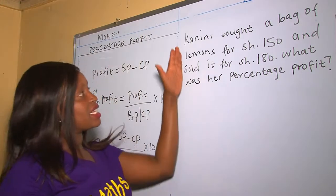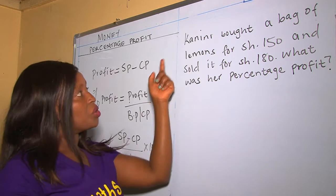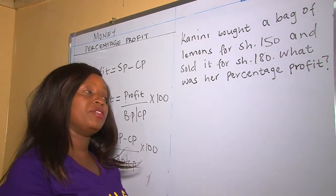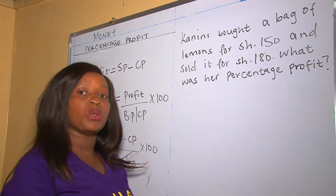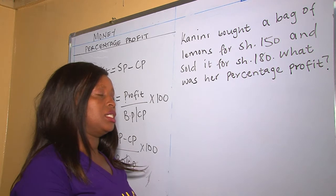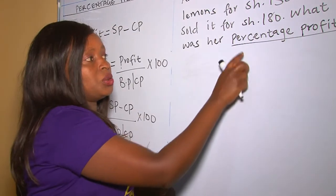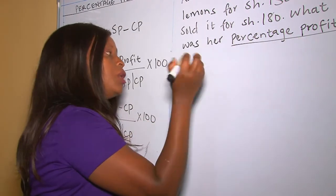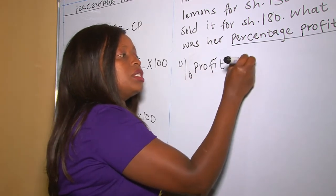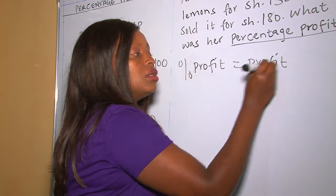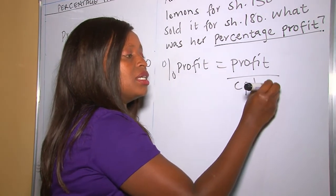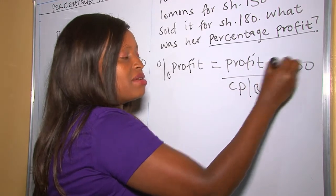In this example, we are told that Kanini bought a bag of lemons for 150 shillings and sold it for 180 shillings. What was the percentage profit? To answer this, we know percentage profit equals profit over cost price or buying price, then multiplied by a hundred.